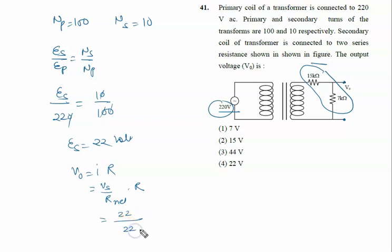Because kilo ohm, you have to convert into ohm, so 22,000. V₀ is taken across 7 kilo ohm, so it is 7,000.